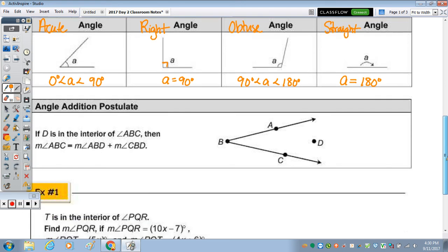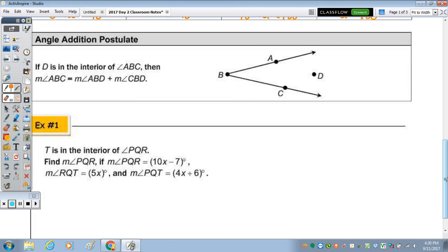Now angle addition is the same as segment addition in that it's the sum of the parts equals the whole. But we're not dealing with segments, we're dealing with angles. So to start, it says if D is in the interior, as you can see it's in the interior of angle ABC, then the measure of angle ABC, that's the whole. This whole equals the measure of ABD, so if we trace ABD, the ray through it, plus the measure of angle CBD, tracing CBD. So the pink plus the green is equal to the orange.